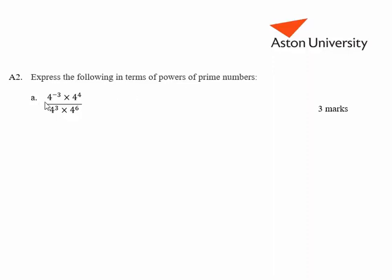In this expression all of the bases are four, so all we have to do is add the exponents on the numerator and subtract the exponents on the denominator. So we've got minus three plus four, and then minus three minus six. Minus three and minus three is minus six, and another minus six is minus twelve. Minus twelve plus four gives us minus eight.